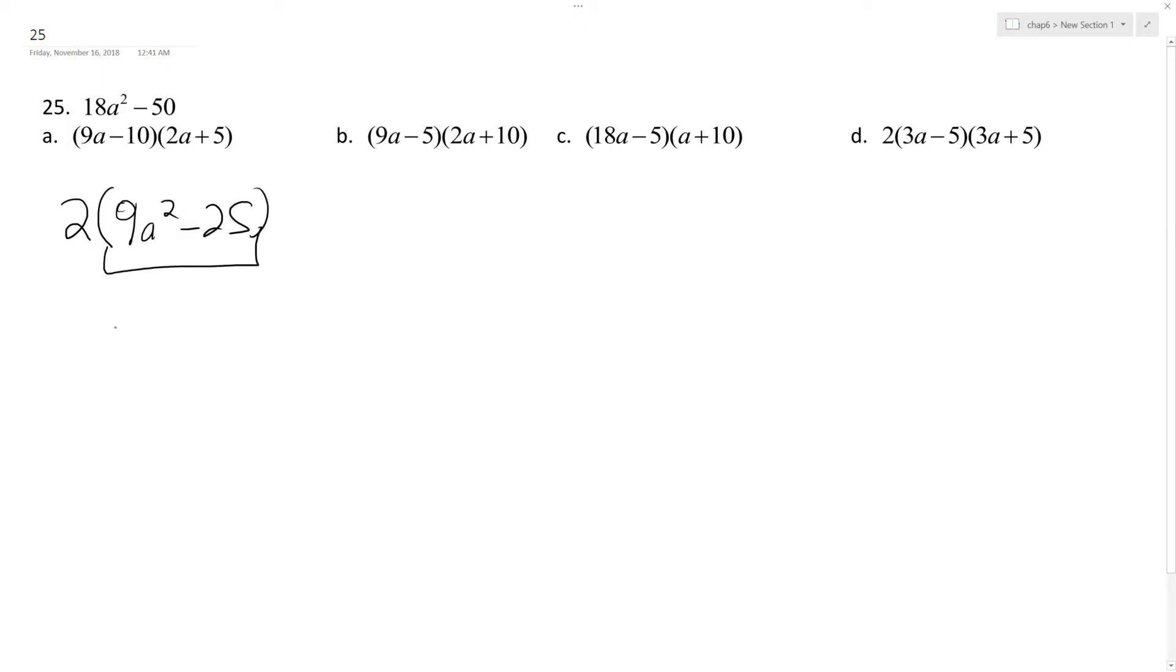This is the difference of perfect squares, so I get 2 quantity (3a - 5)(3a + 5). That is what we have up here for solution D.